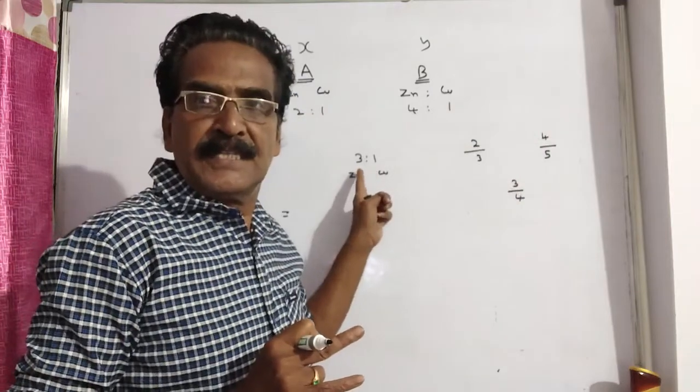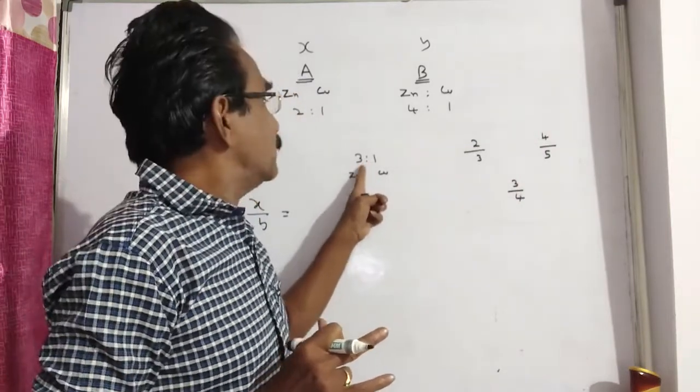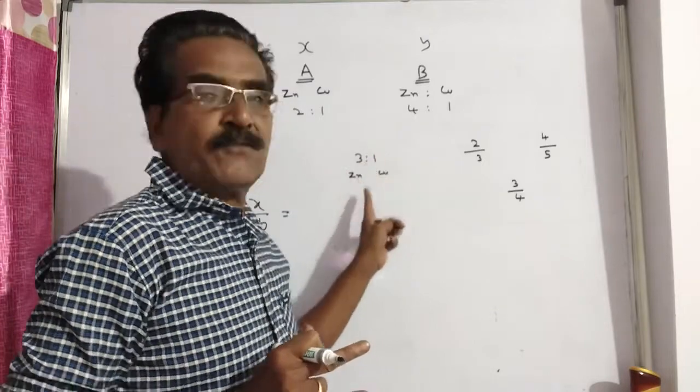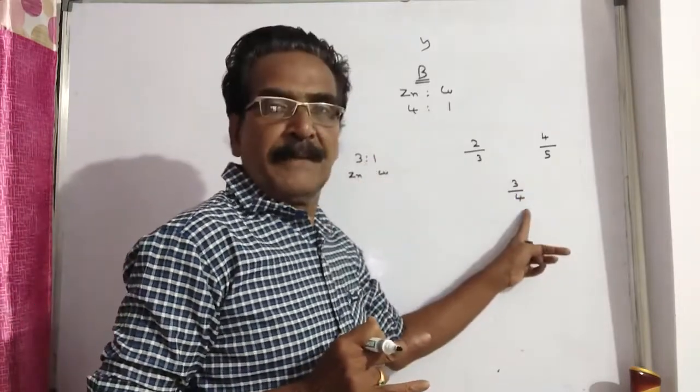In the resultant mixture, in the resultant alloy, zinc is 3/4 and copper is 1/4. So zinc 3/4.